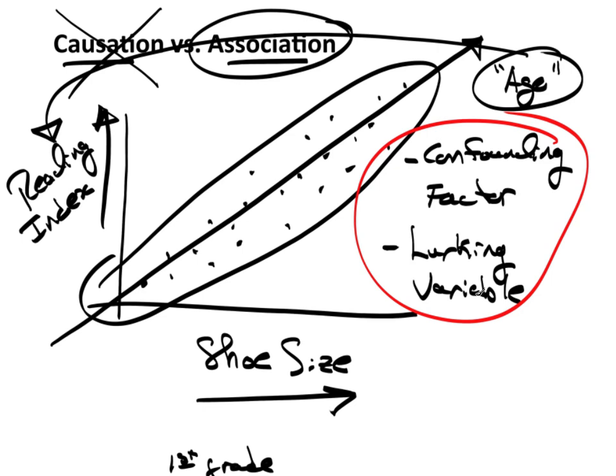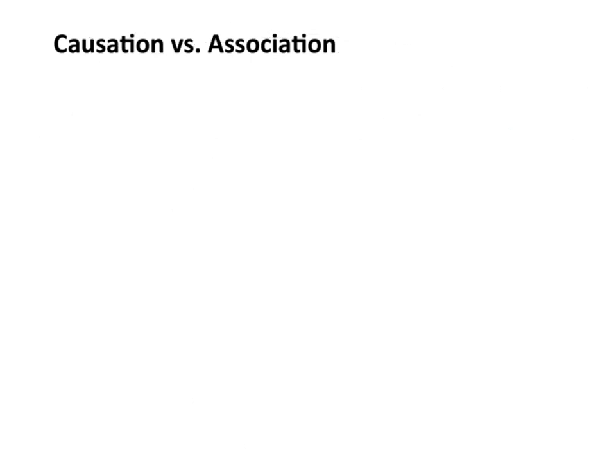You may be able to identify some and control for some, but the idea of controlling for all, I think, is easier said than done. So the emphasis here, again, is simply that association and causation are not equal to each other. They are two different things.